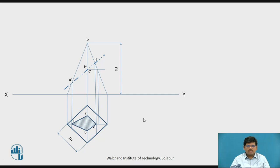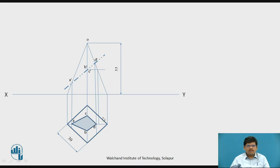Now we will join the cut portion. This is the sectional view of the solid, where the cutting plane cuts it at points a dash, b dash, c dash, and d dash, when the cutting plane is equally inclined to the vertical plane.